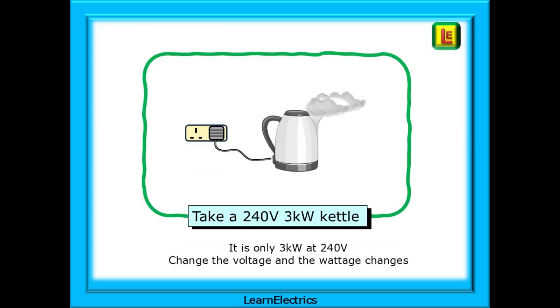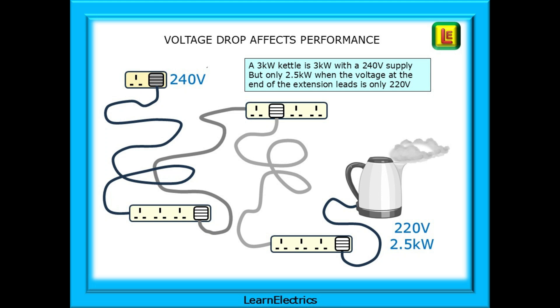Let's take a simple 240 volt electric kettle rated at 3 kilowatts. It's only 3 kilowatts at 240 volts. If we change the voltage, then the wattage changes. So how does this affect the performance of the kettle? Here we have our 3 kilowatt kettle, which we said is only 3 kilowatts with a 240 volt supply. Imagine that there is no available socket at the coffee making table, so somebody has run a series of extension leads to it. Problem solved. The kettle works, and that's all that matters. But the kettle might now be rated at 2.5 kilowatts, because the voltage at the end of the extension leads is only 220 volts. Reduce the voltage, reduce the wattage at the point of use, and the kettle takes longer to boil the water.